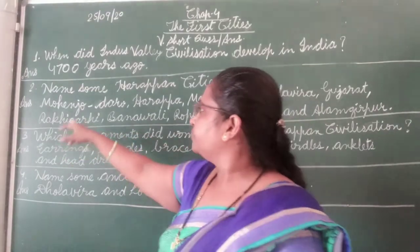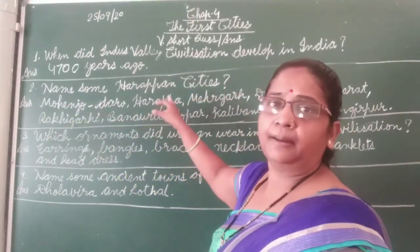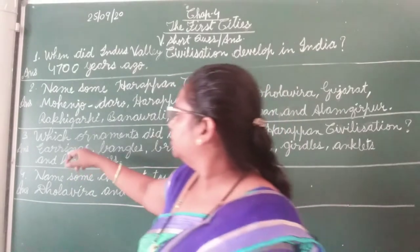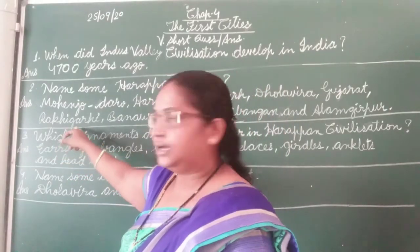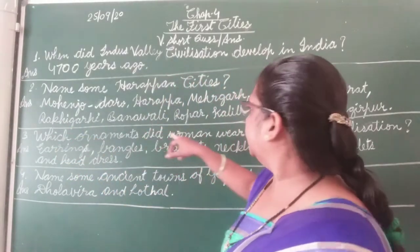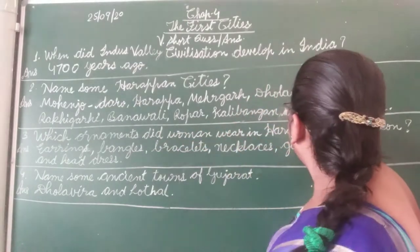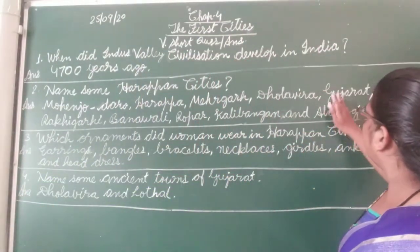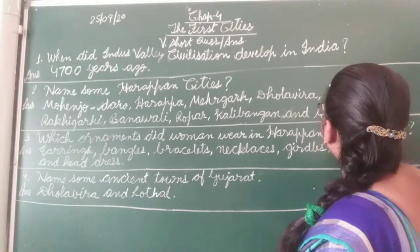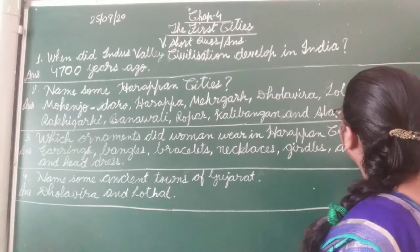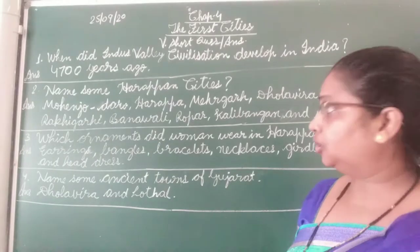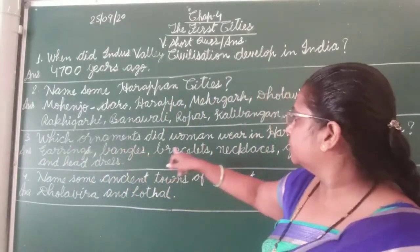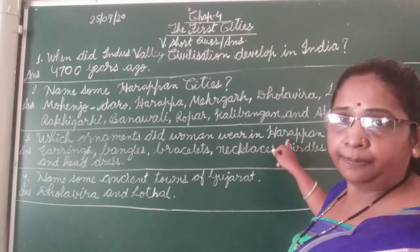Second question: name some Harappan cities. Answer: Mohenjo-daro, Harappa, Mehrgarh, Dholavira, Lothal in Gujarat, Rakhigarhi, Banawali, Ropar, Kalibangan, and Alamgirpur.